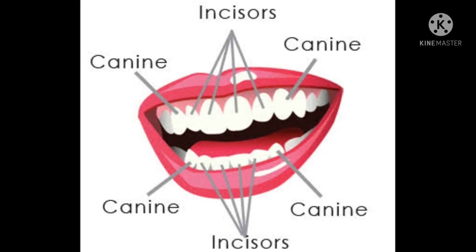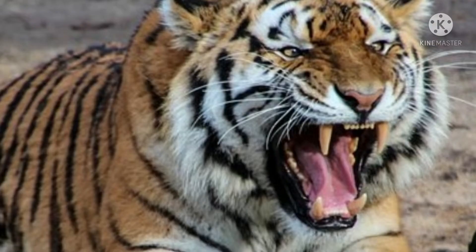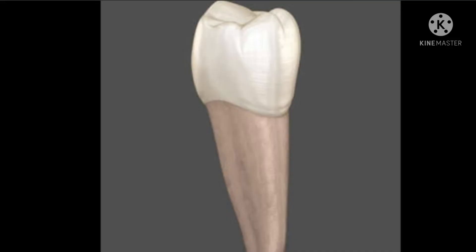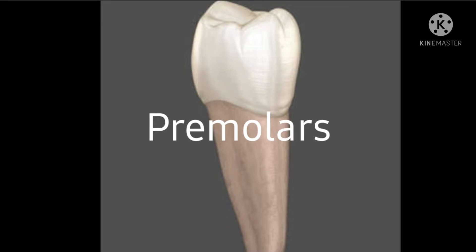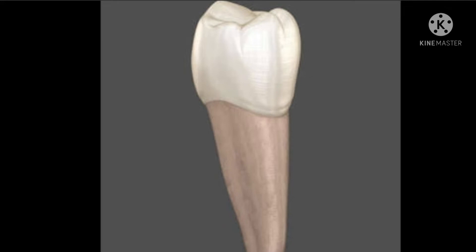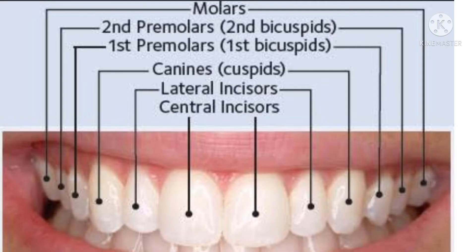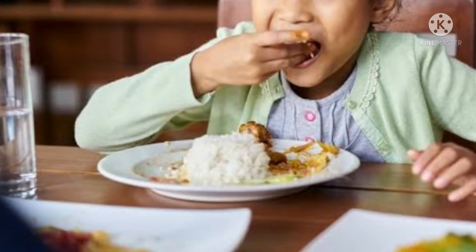We have one canine on both sides of the incisors. Canines are sharp and are used for tearing food. In flesh-eating animals, canines are bigger and sharper so that tearing flesh is easier. There are eight premolars in all, four in each jaw. These are broad teeth next to the canines. Premolars help to crush food and chew it.